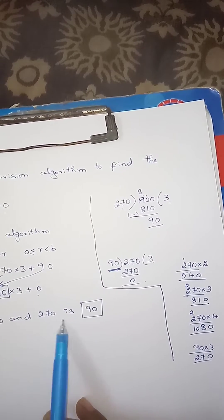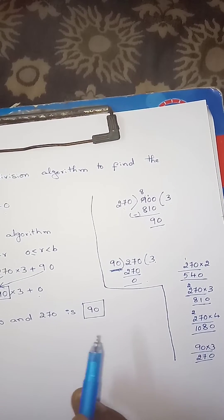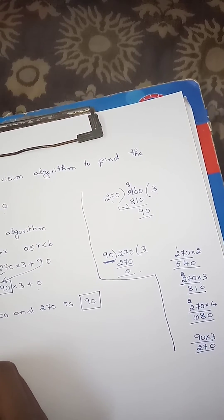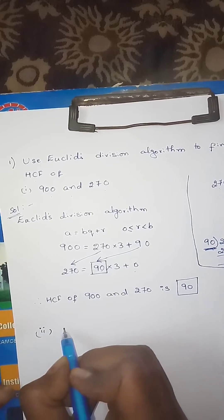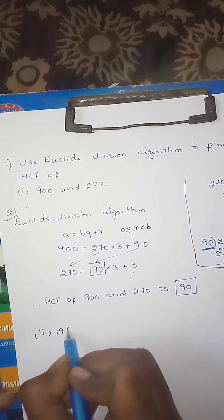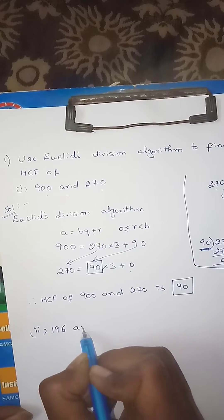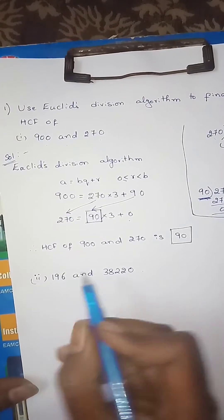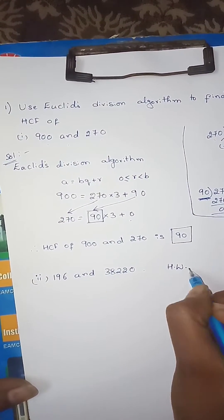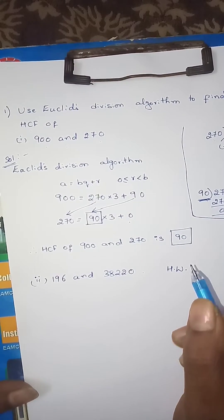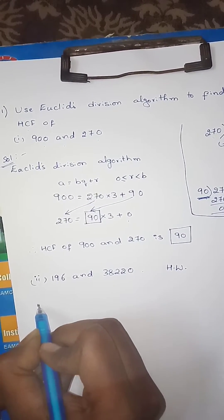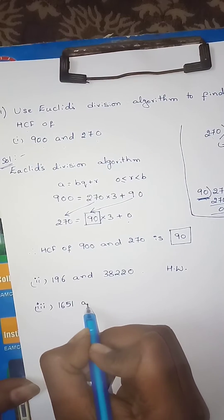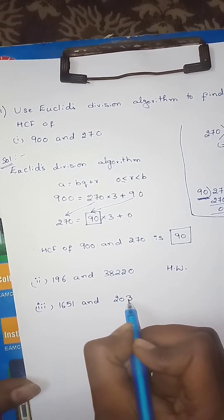So the HCF of 900 and 270 is 90. It's easy to do. You can do homework. Leave comments if you have doubts. Now the third problem: find HCF of 1651 and 2032.